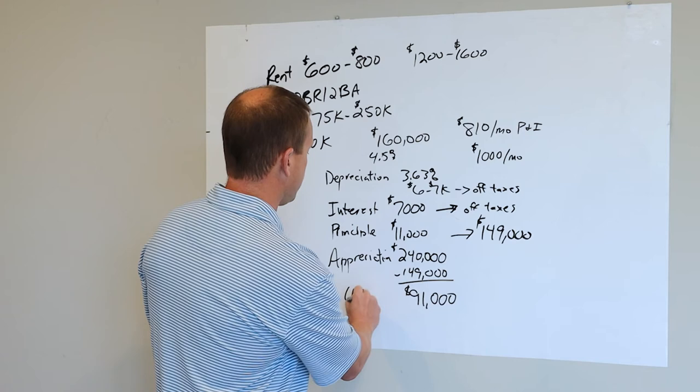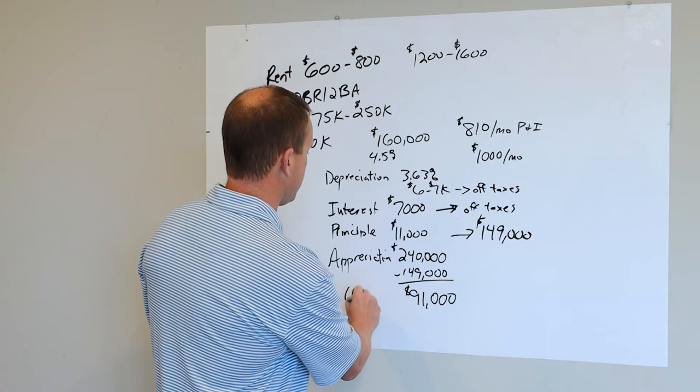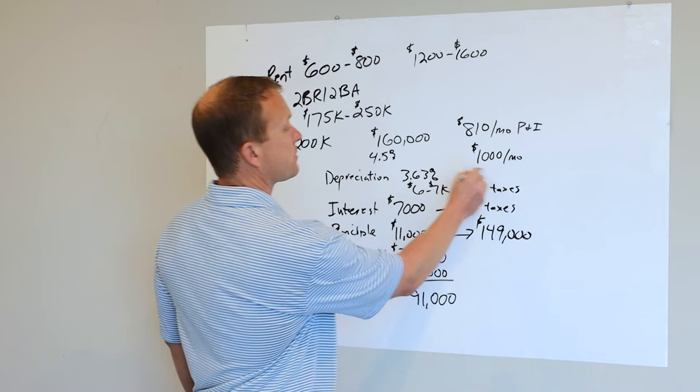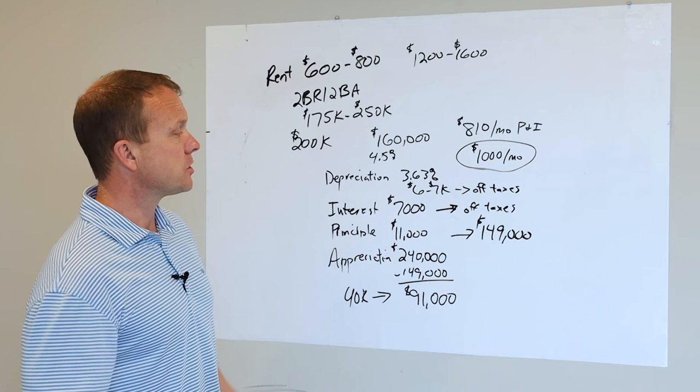So your total equity in that property is $91,000. So you've taken a $40,000 investment and had a roommate offset the majority of this payment each month because they're paying you somewhere in this range.